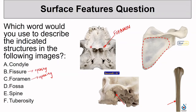Looking at the image below, the outlined structure again looks like an opening, so it's either a fissure or a foramen. Asking whether it's irregular or more rounded — in this case it is more irregular, so this is a fissure.